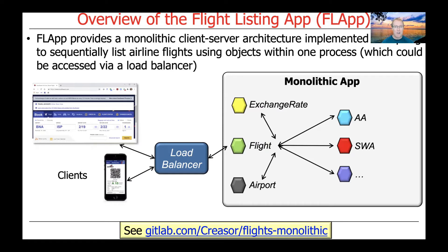This diagram shows the architecture of the monolithic version of the FLAP case study. As you can see, there's a monolithic app with a bunch of objects that communicate with each other by making method calls, and those objects reside within a single process. You can access the source code for the monolithic version of the app at the link at the bottom of this slide.